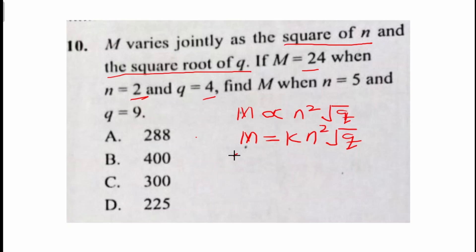So wherever we see M we put 24 equals, I want to put the k last, so n is 2 squared, the square root of q which is 4, then we bring our k.